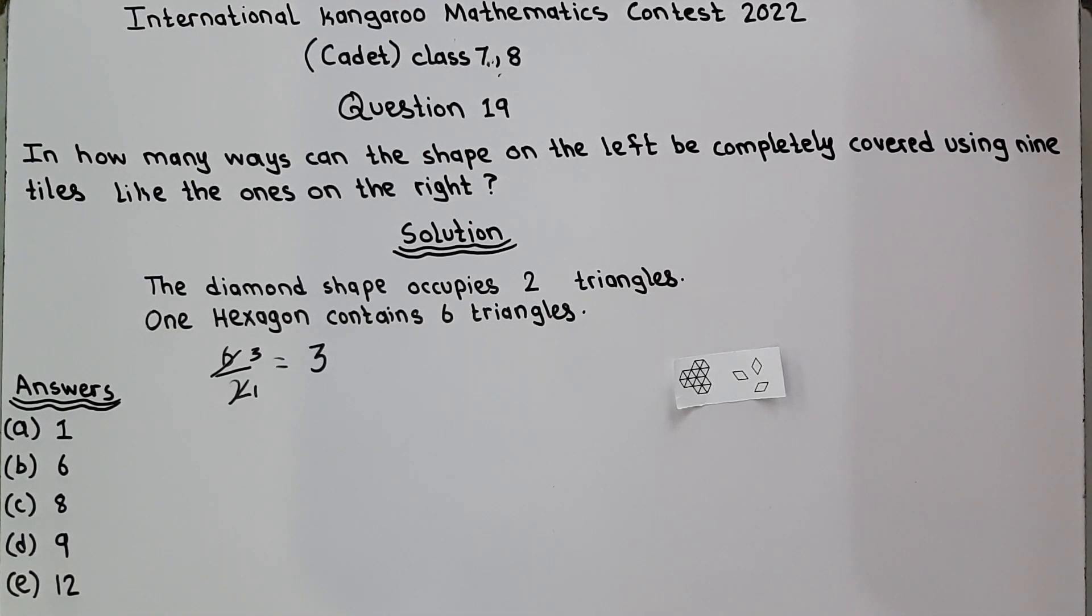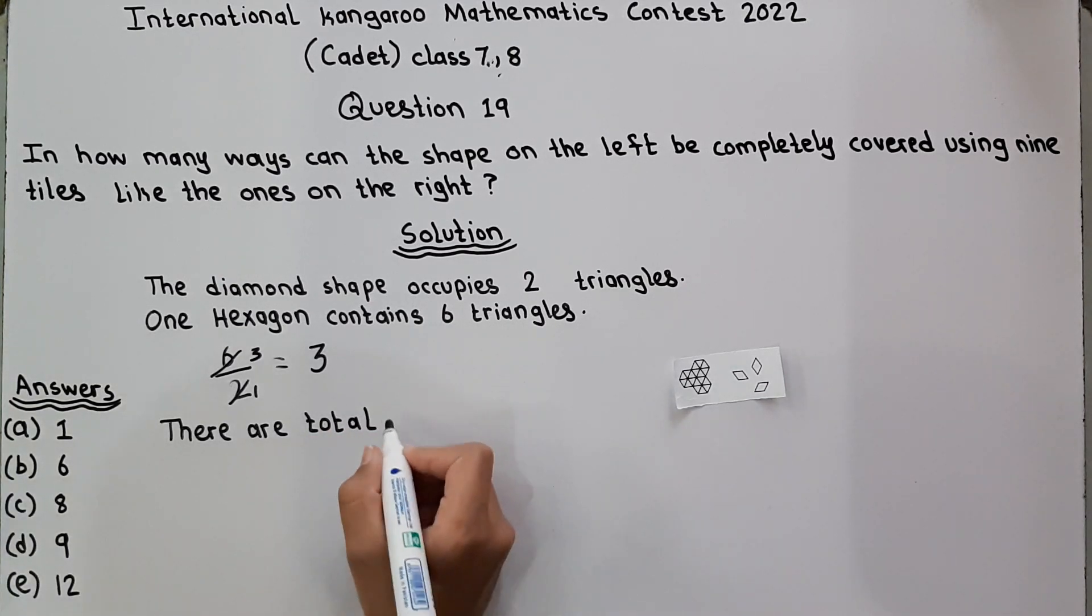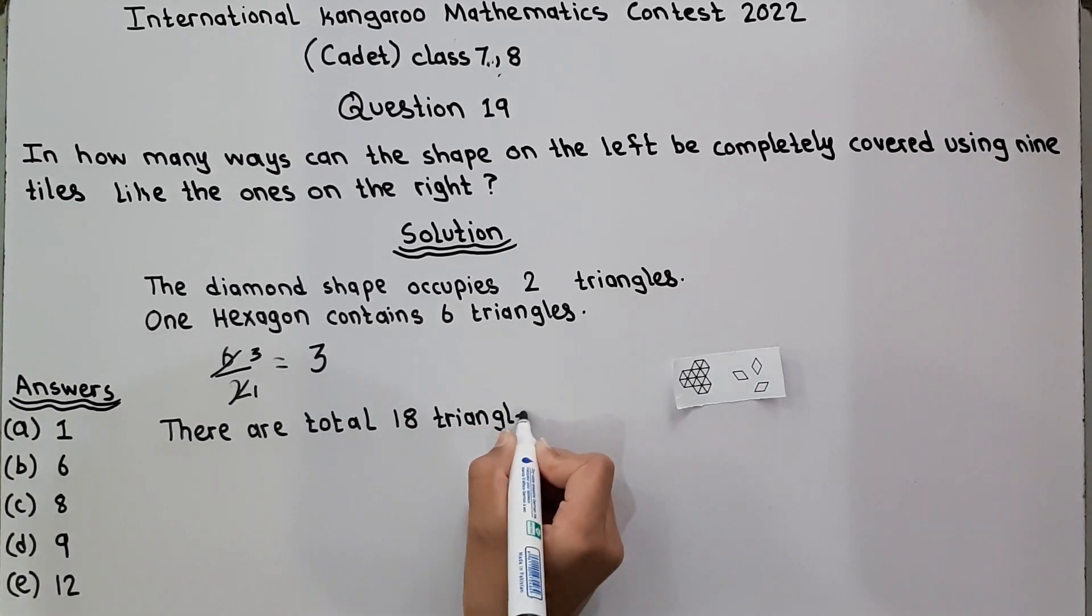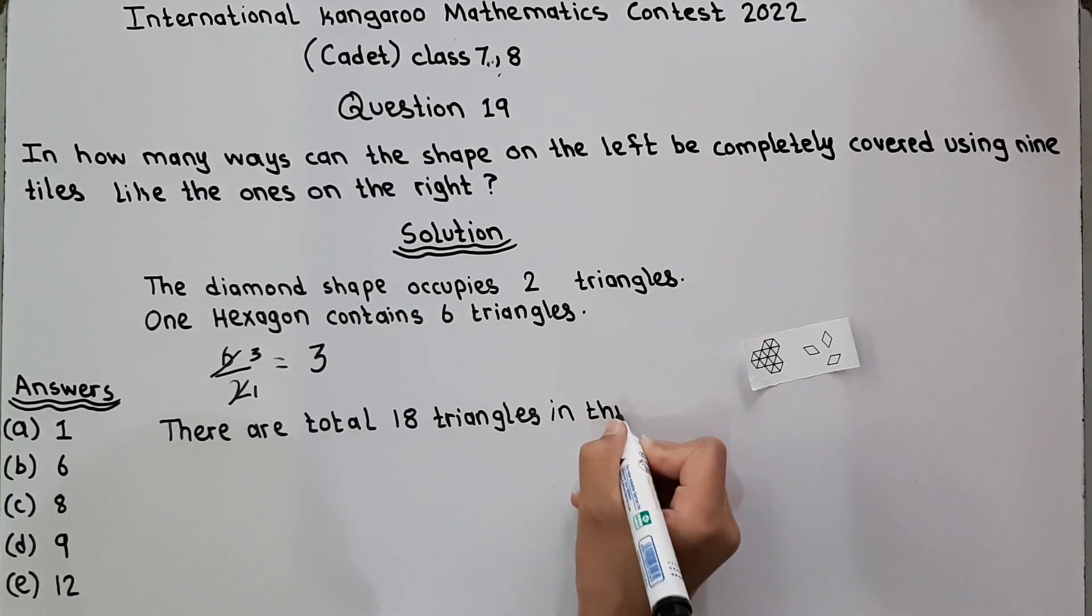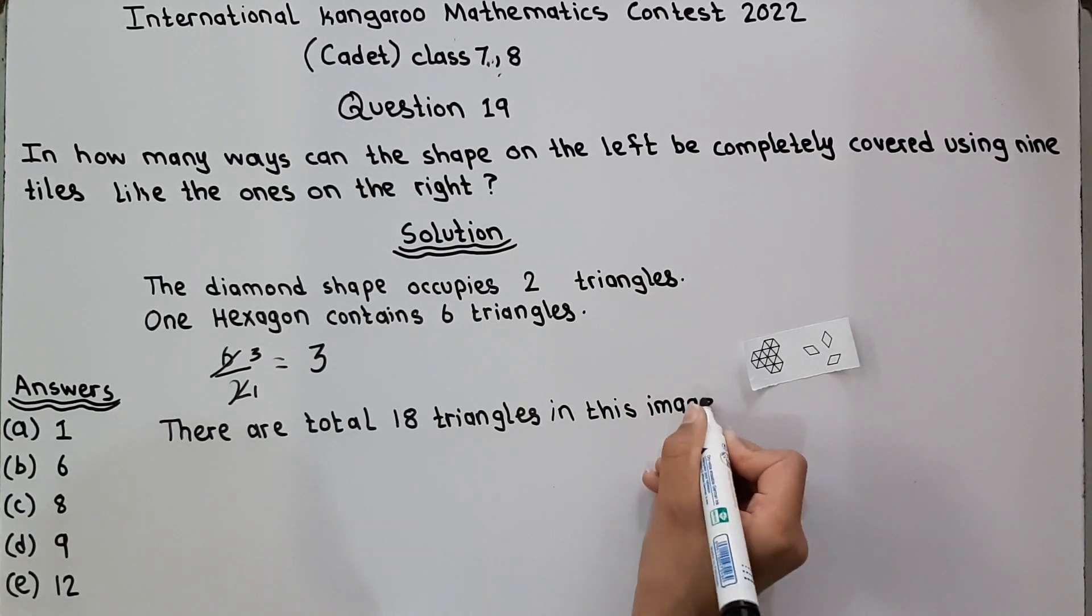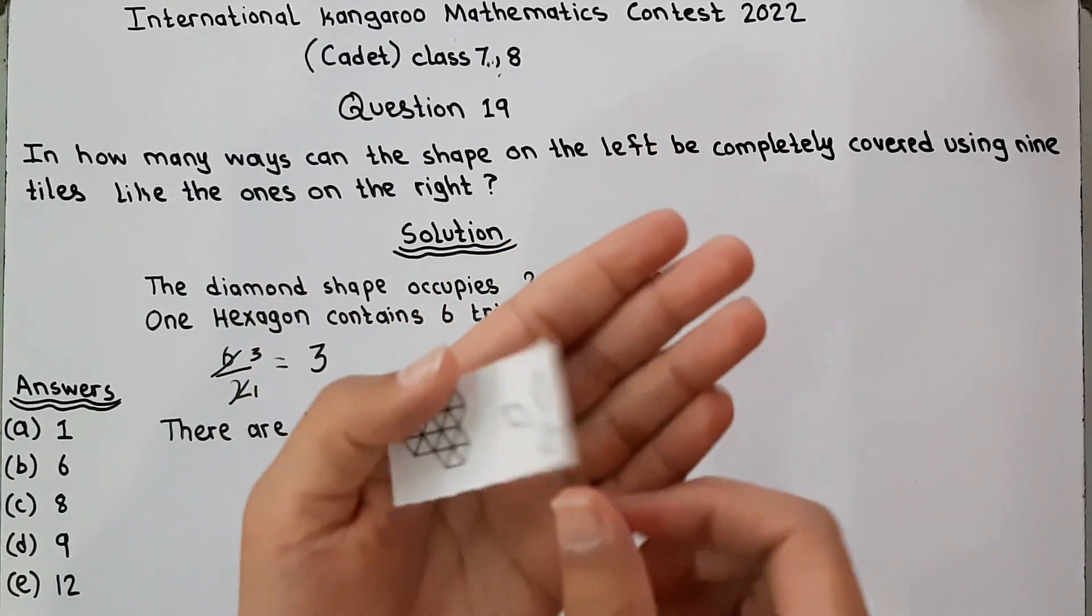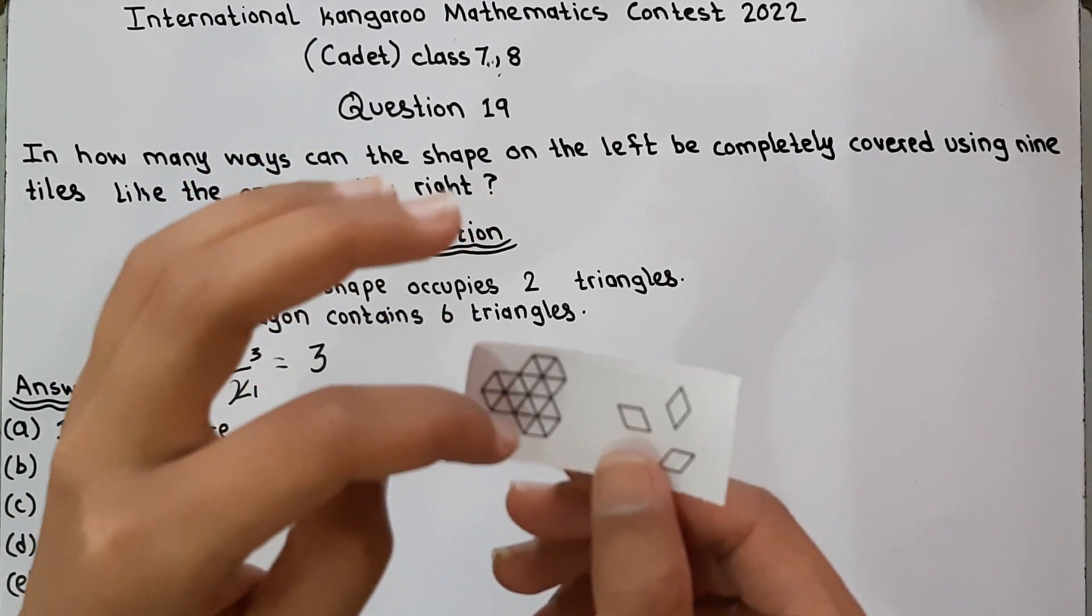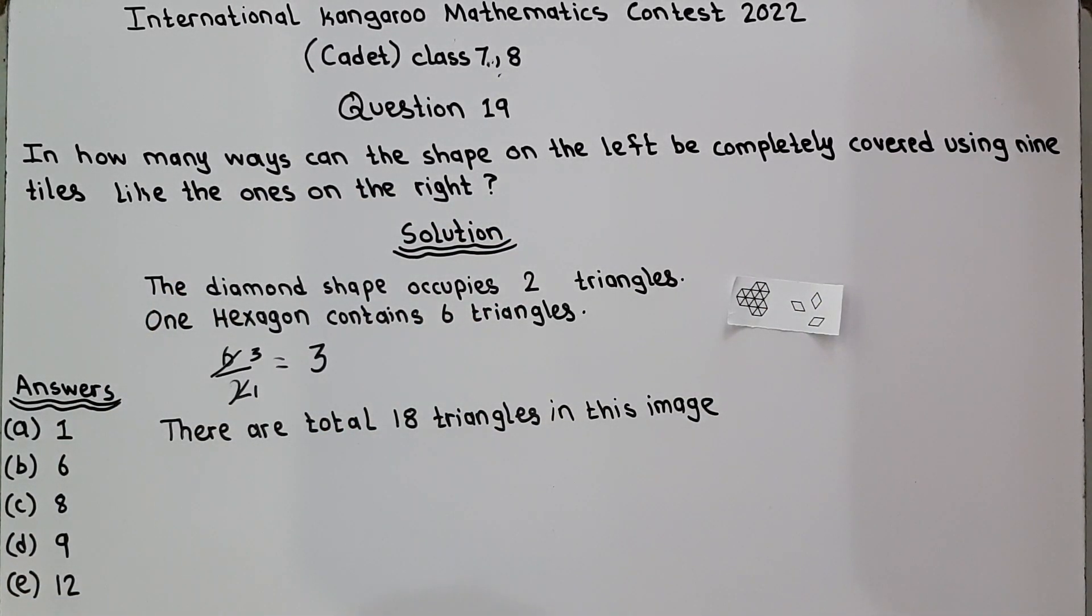There are total 18 triangles in this image. These three hexagons contain 18 triangles, and we can count them: one, two, three, four, five, six, seven, eight, nine, ten, eleven, twelve, thirteen, fourteen, fifteen, sixteen, seventeen, eighteen. So we know that this image contains 18 triangles.